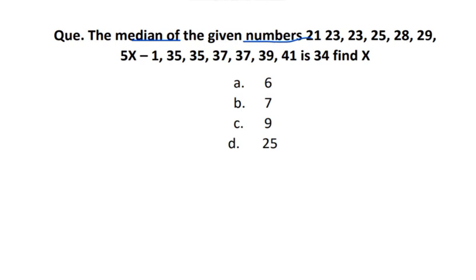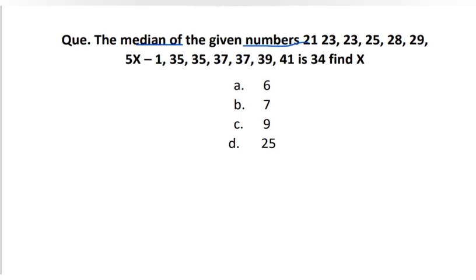Coming to the next question - we have to find the median. To find the median, arrange the values in ascending order - they appear to already be arranged. There are 13 terms, which is odd, so the median is the (n+1)/2 = 7th term. Counting to the 7th term: it is 5x - 1, and the median is 34. So 5x - 1 = 34, giving 5x = 35, so x = 7. The answer is option B.